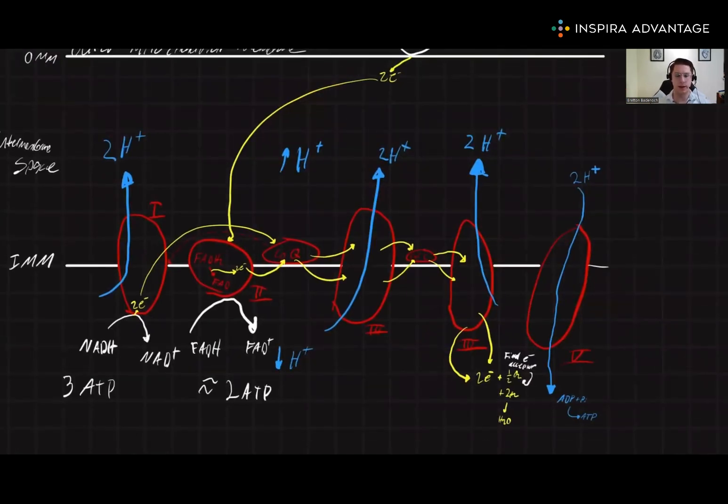Now let's recap where all of these hydrogens are coming from. We have 2 coming out of complex 1, 2 coming out of complex 3, and 2 coming out of complex 4. Now it's these hydrogens that actually power ATP synthesis.